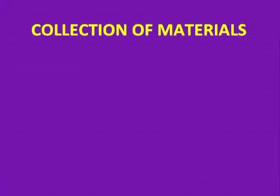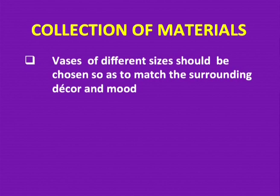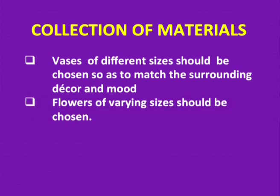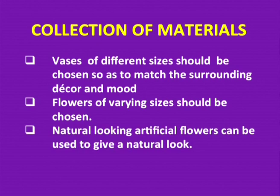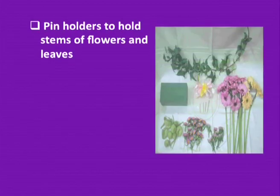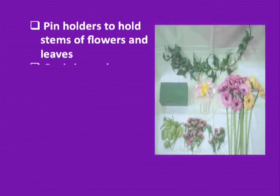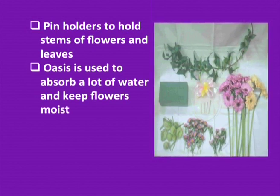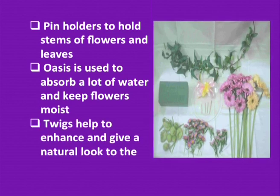For starting flower decoration, we need to understand certain terms required frequently in making an arrangement. First is the collection of materials. Vases of different sizes should be chosen to match the surrounding decor and mood. Flowers of varying sizes should be chosen to break monotony. Natural-looking artificial flowers can be used to give a natural look. Natural leaves can also be used to increase bulk. Pin holders, oasis (which absorbs water and keeps flowers moist), and twigs to enhance the natural look are all needed.